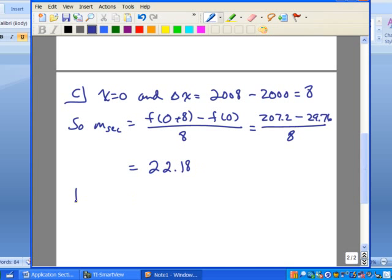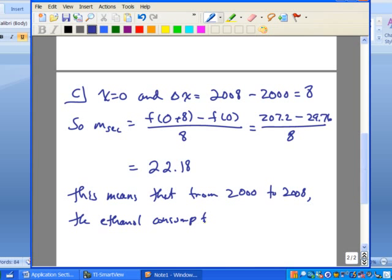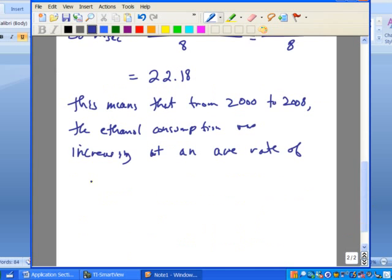22.18. So this means that from 2000 to 2008, the ethanol consumption was increasing at an average rate of 22.18 million barrels per year.